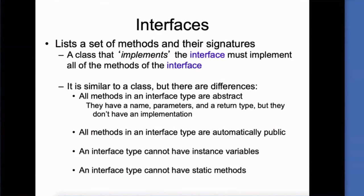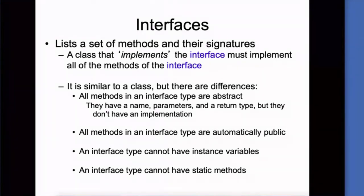Interfaces don't have instance variables. However, they can have static variables, ones that belong to the interface. They do not have static methods, and they are public by default.